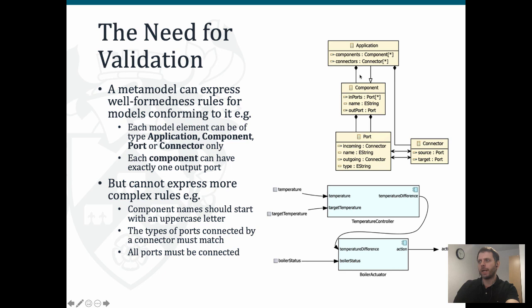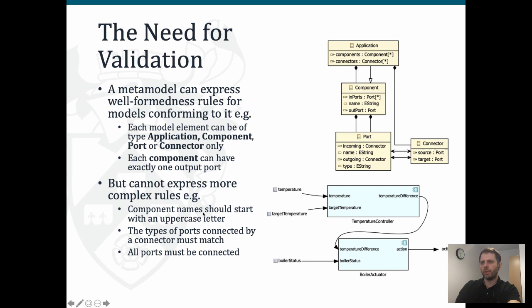The meta model also expresses some structural constraints, such as cardinalities. For example, if we define that every component can have exactly one output port and we try to create a component with two output ports, that would violate this constraint and the model wouldn't be valid as far as EMF is concerned. We can define structural constraints in the meta model itself - for instance, we cannot connect two connectors because there's no such reference in our meta model. But there are some rules we may want to specify that the meta model doesn't support.